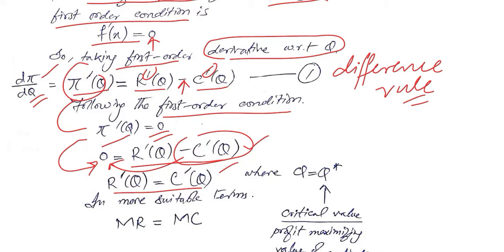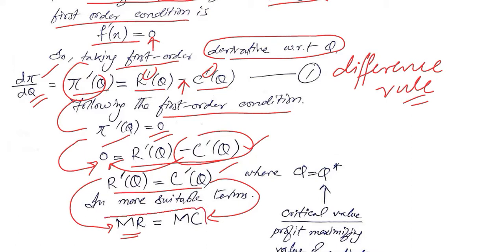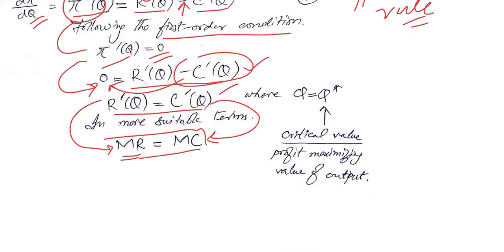The derivative of the revenue function is the marginal form of the given function — we can call it the marginal revenue function. The derivative of the cost function we can call the marginal cost function, which makes more economic sense. This gives us the profit maximization condition of the firm: marginal revenue equals marginal cost.